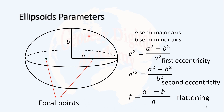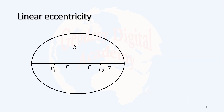Based on these parameters, an ellipse — or a biaxial ellipsoid — can be defined. Linear eccentricity is a measure showing how far the focal points are from the center of an ellipse. I can show it here: this distance is called linear eccentricity.